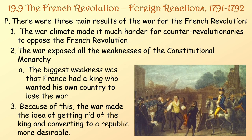There were three main results of the war for the French Revolution. Number one, the war climate made it harder for counter-revolutionaries to oppose the revolution. Number two, the war exposed all the weaknesses of the constitutional monarchy — the biggest being that France had a king who wanted his own country to lose the war. And because of this, the war made the idea of getting rid of the king and converting to a republic more desirable.